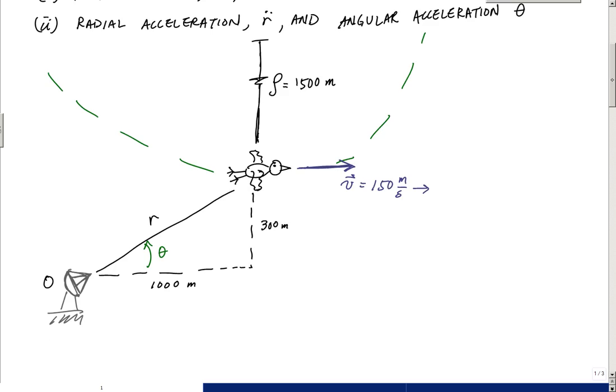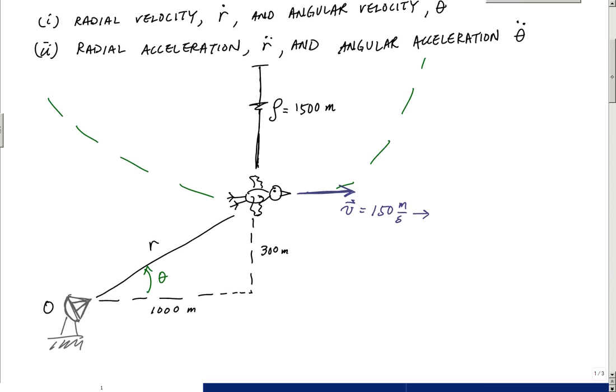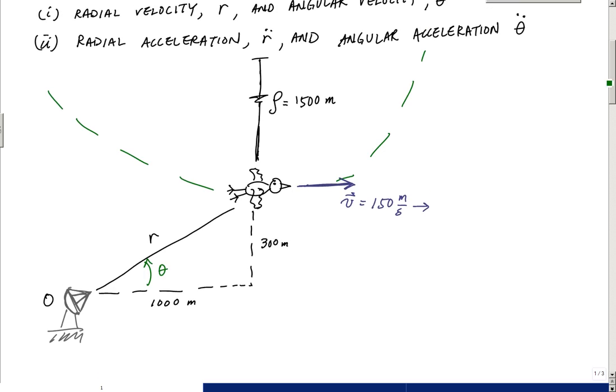And we want to find all these components, R dot, theta dot, R double dot, angular acceleration, all this junk at some time. But the first thing you've got to do, and the way we're going to solve this, is we're going to determine, forget the radar, the first thing we're going to do is determine what the total acceleration experienced by this bird, or what the acceleration and velocity vectors are of this bird first. The total, it doesn't matter what coordinate system we're looking at.